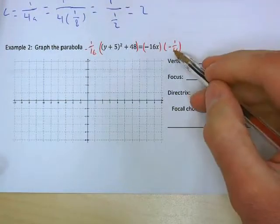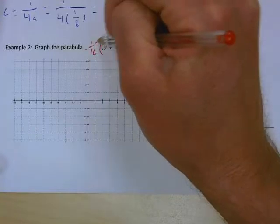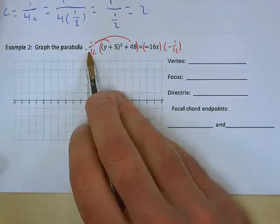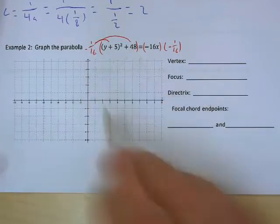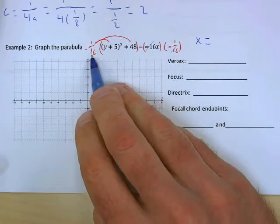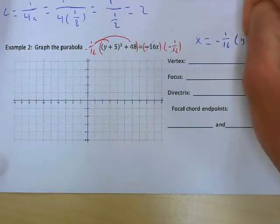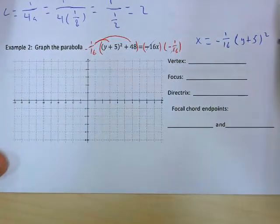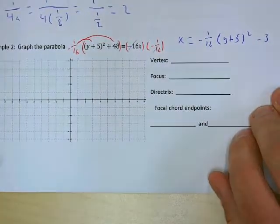The -1/16 and the -16 reduce to 1 on the right side. On the left, distribute -1/16 to both parts: -1/16 times the squared part, and -1/16 times positive 48 gives -3. So we get x = (-1/16)(y+5)² - 3. That's our equation in descriptive vertex form, and -1/16 is our a value.